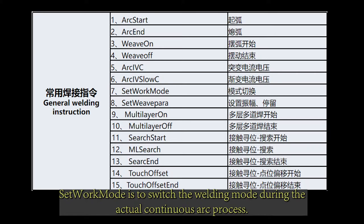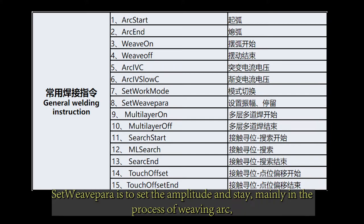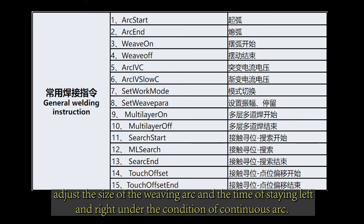Set work mode is to switch the welding mode during the actual continuous arc process. Set width para is to set the amplitude and state, mainly in the process of weaving arc — to adjust the size of the weaving arc and the time of staying left and right under the condition of continuous arc.